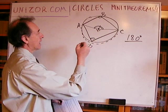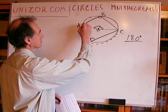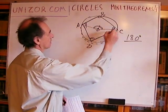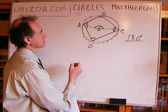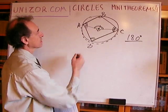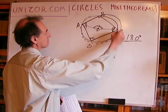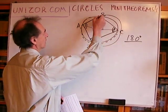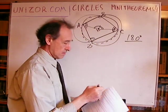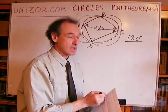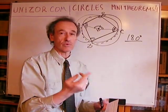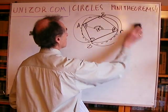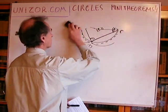Analogously, the sum of the other pair of opposite angles is also 180 degrees, because the corresponding arcs together give the full circle. So this is simple.